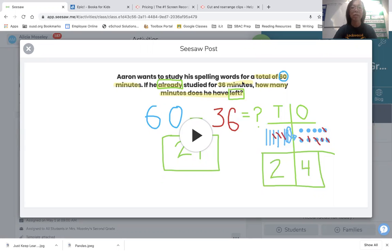But I want to look at it real quick because there's a word that wasn't on our list that I want to talk about here. So Aaron wants to study his spelling words for a total of 60 minutes. I didn't highlight that keyword, but total always tells us what. We know that that's going to be our sum or else it's the number we start with in a subtraction problem.